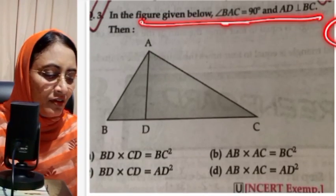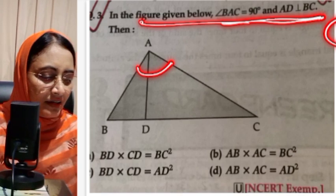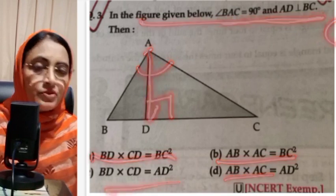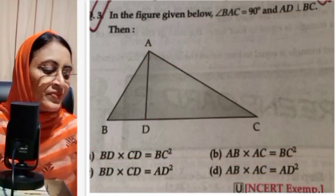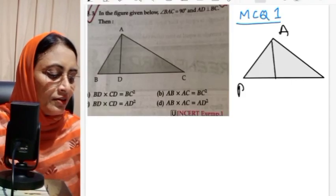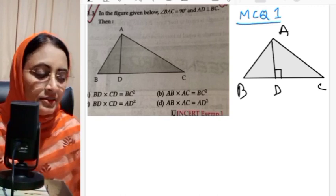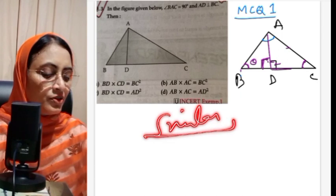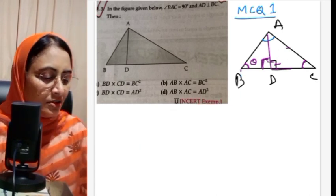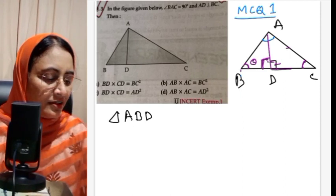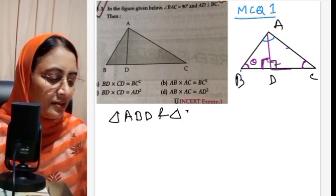In the figure given below, BAC is equal to 90 degrees and AD is perpendicular to BC. Let me draw this. Triangle ABC, and AD is perpendicular, that means this angle is 90 degrees. So we need to prove these two triangles similar: triangle ABD and triangle CAD.